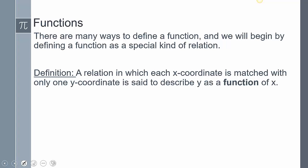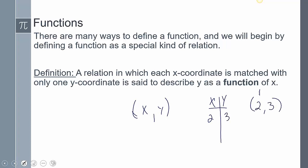A relation is one in which each x-coordinate is matched with only one y-coordinate, and it is described as y as a function of x. A relation is basically mapping an x value to a y value. We see these in different forms — for example, the point (2, 3) means this x value is paired with this y value. It doesn't have to be numbers; you could map age to height and examine the relationship between them.